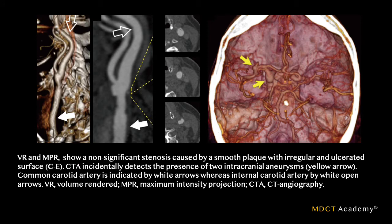This next image series also shows an ulcerated plaque. On the axial images from superior, middle, and inferior levels, you can see that the plaque wall varies — it may appear smooth at one level but irregular or ulcerated at another. You cannot assess ulceration from a single slice; you need to review a series of slices. The images to the right show a 3D volume rendering of the circle of Willis, incidentally demonstrating two tandem aneurysms not initially part of the carotid CTA focus.